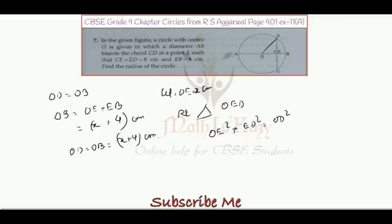We have taken OE as x centimeter, so we can write x square plus ED square. ED is given as 4 centimeter, so 4 square equals to x plus 4 the whole square. We just need to solve it and find the value of x. We can use a plus b whole square formula.